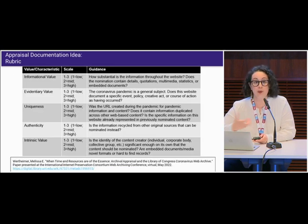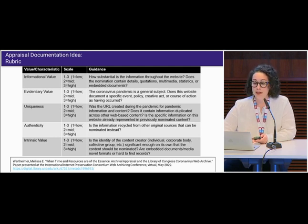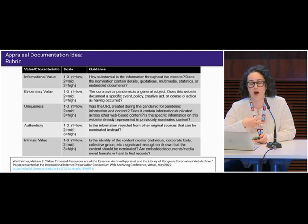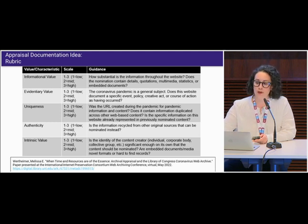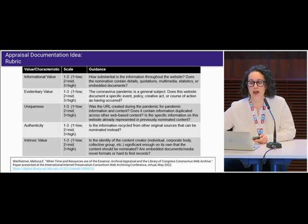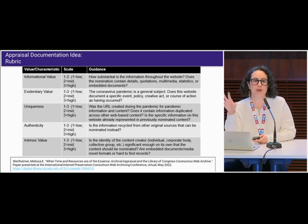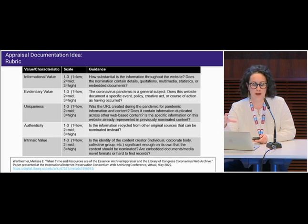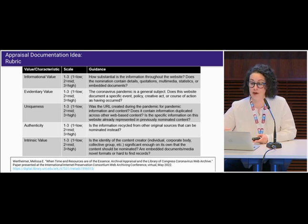What are some ways we can create documentation of our appraisal processes for web archive collections? One idea I have used is to create a rubric of archival values — like the ones we just defined — and then select websites above a score threshold. This can help make granular decisions better documented and more transparent, as well as help a team use consistent criteria and keep within data budget limits. You can customize the rubric based on your collection. I talk specifically about this rubric in the 2022 IIPC online conference, and we will use a sample rubric in the workshop to appraise an event-based web archive.